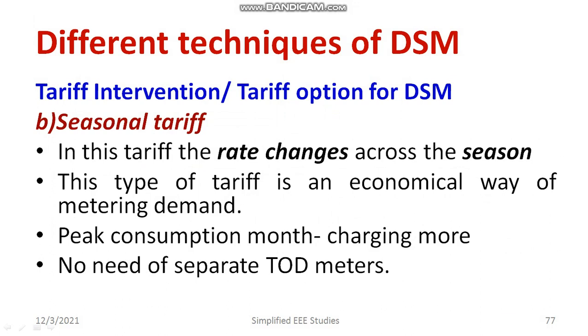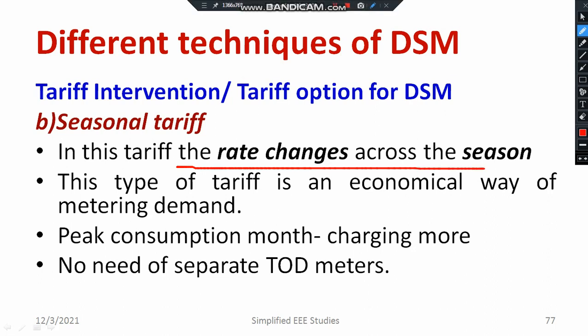The second type is seasonal rate tariff. In seasonal rate tariff, the rate changes across seasons. During monsoon time, the cost of electricity is very less because there is a lot of rainfall, it is easy to produce electricity, and there is no scarcity of water. On the opposite side, during summer season, there is a lot of scarcity of electricity, and at that time, the cost of electricity will be high. Based on that, the supply company can charge the cost of electricity accordingly.